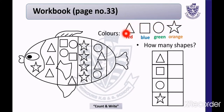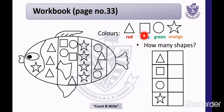Look at the first shape. This is the shape of a triangle. We will color the triangle with red color. The next shape is a square, and we will color the square with blue color.